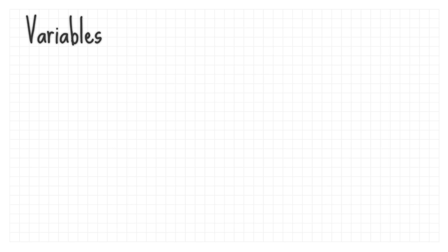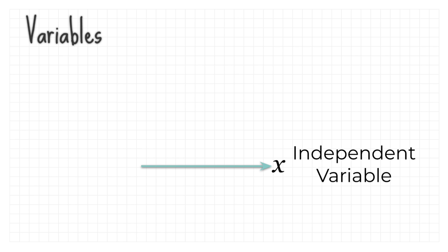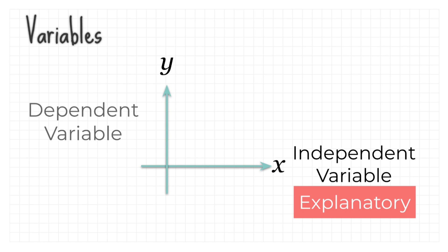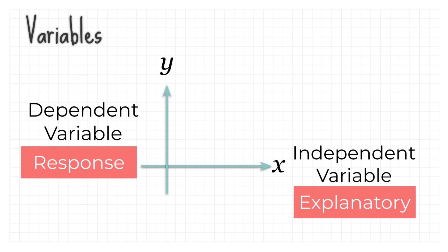Just before we start, let's recall what variables are. The first one is the independent variable, or explanatory variable. An independent variable is the variable the experimenter controls — it is the component you choose to change in an experiment and is not dependent on any other variables. The second is the dependent variable, or response variable — the measurement that changes in response to what you change in the experiment.